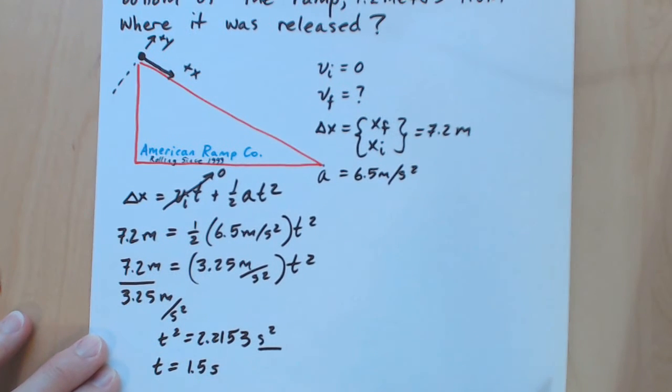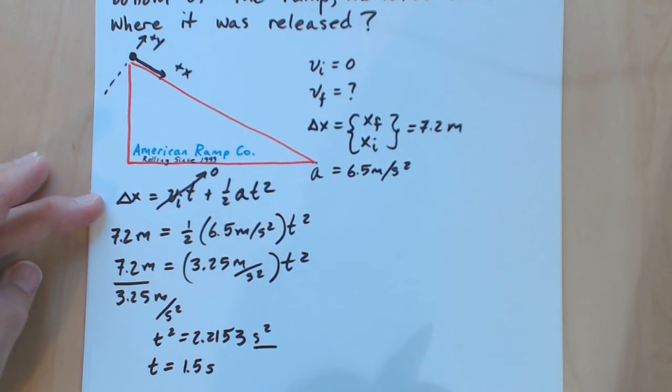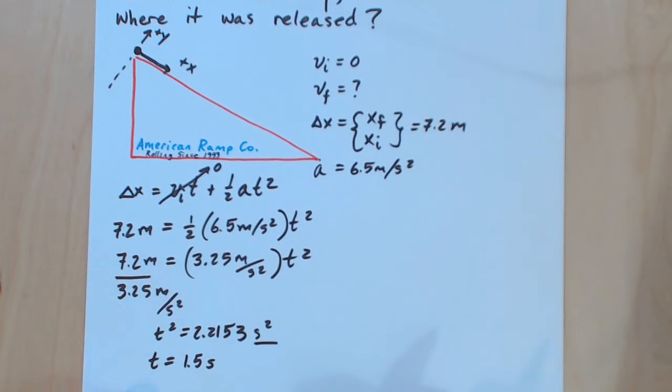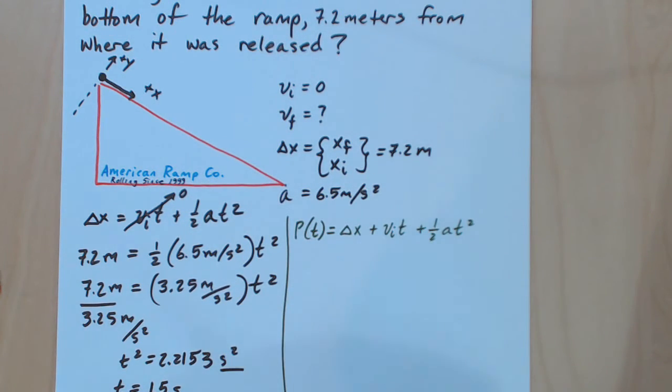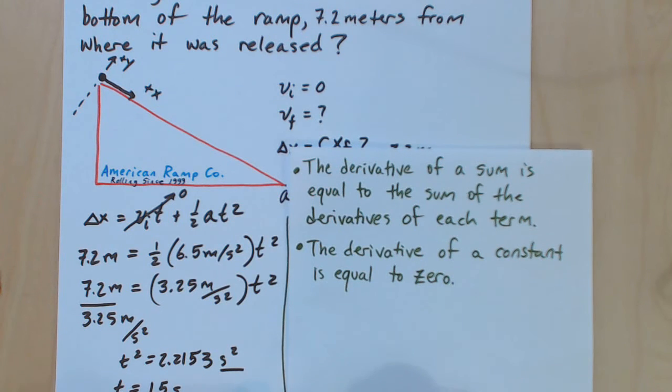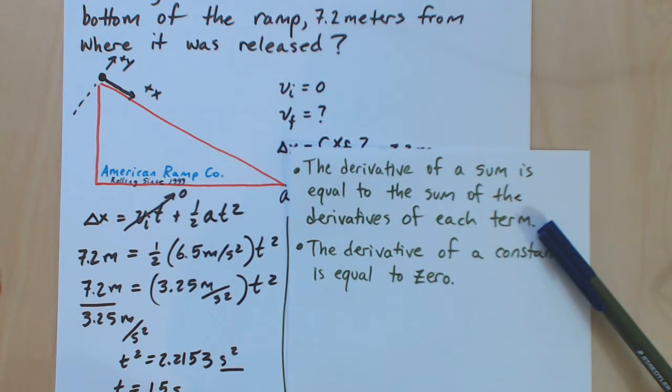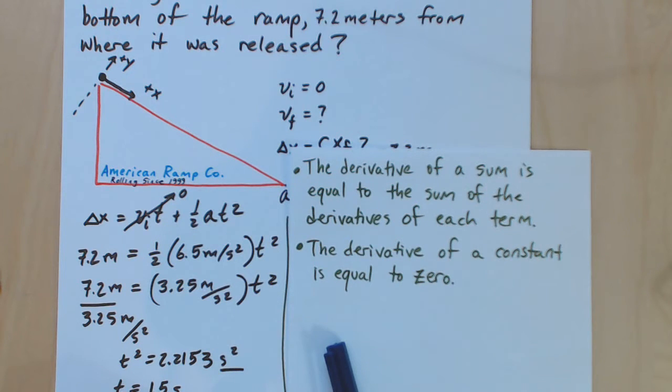We don't really need to use any calculus here because when the initial velocity is zero, this is a really easy algebra equation to solve. Now, let's have a look at what happens when we want to find the velocity. To find the velocity, not that we're asked to do it, but we're just practicing some calculus here. Let's remind ourselves of a couple of things. First, the derivative of a sum is equal to the sum of the derivatives of each term. And the derivative of a constant is equal to zero.